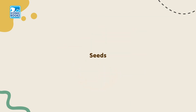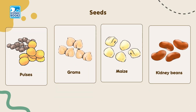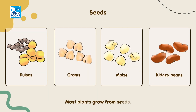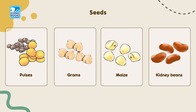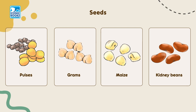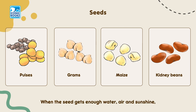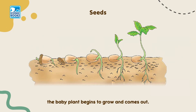Seeds: Most plants grow from seeds. Seeds are found inside the fruit. Inside each seed there is a baby plant. When the seed gets enough water, air and sunshine, the baby plant begins to grow and comes out.